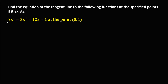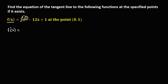First, we need to find the derivative of this given function — that's f prime of x. Using the rules of the derivative, we just need to multiply the exponent by its numerical coefficient. So 3 times 2 is 6, then x, and for the exponent minus 1, so 2 minus 1 is 1. Therefore, the derivative of 3x² is 6x.